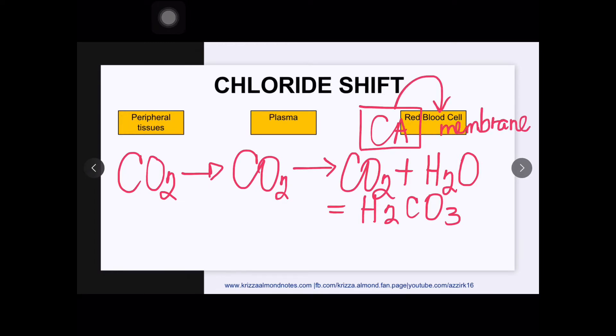Again, when carbon dioxide enters the red blood cell it will be combined with water to produce carbonic acid. Carbonic acid will then dissociate into bicarbonate and hydrogen ions.